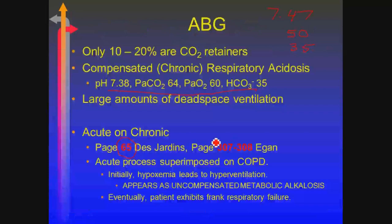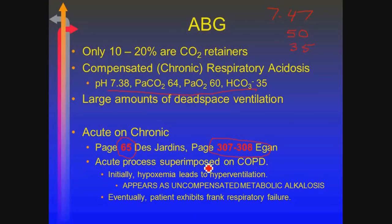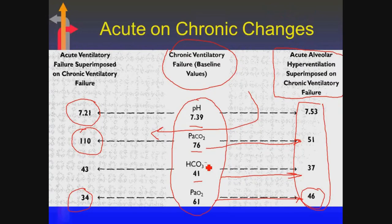See page 65 in DeJardin and pages 307 and 308 in Egan — they both go through a good explanation of what I just went through. It's called the acute on chronic: acute hyperventilation superimposed on chronic ventilatory failure. This is probably one of the harder concepts you'll get this semester, but it's very common. The hard part is when you're in the middle of this and I get a blood gas back that looks like a normal pH — does that correlate with what they're showing me clinically? If a patient is barely able to breathe and I get a normal blood gas, something's wrong here.